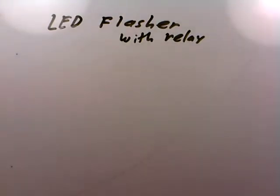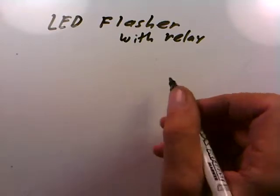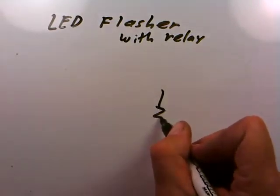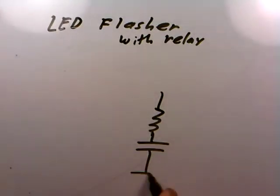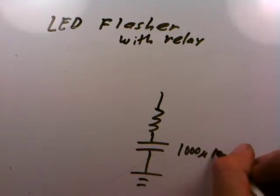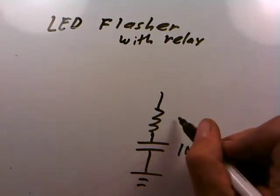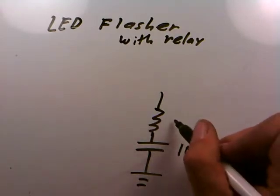We're going to base our design on an RC circuit because RC circuits allow us to control timing. The capacitor we're going to use is 1,000 microfarads, and we're going to use a 100 ohm resistor.